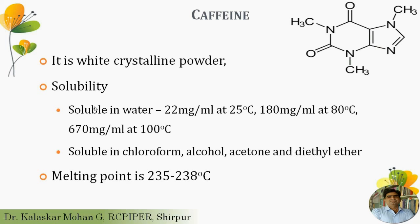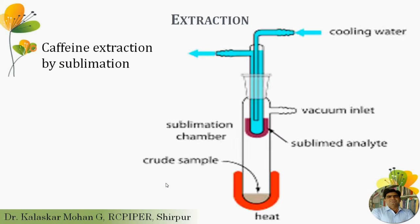Surprisingly, caffeine shows amphisolubility — meaning it is soluble in water as well as in chloroform, alcohol, acetone, and diethyl ether. Its solubility in water increases as temperature increases: at normal room temperature it is 22 mg/mL, while in boiling water it reaches 670 mg/mL. So caffeine is very highly soluble in both water and chloroform. Its melting point is 235 to 238 degrees Celsius.